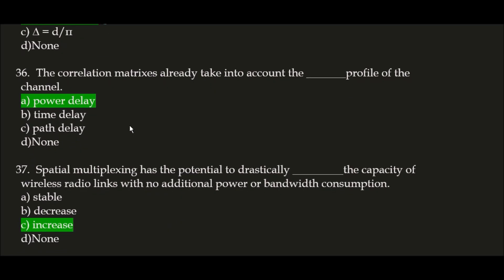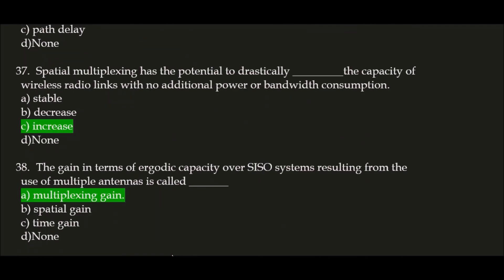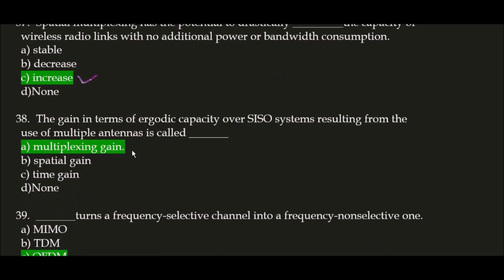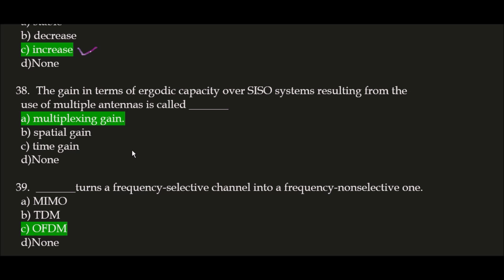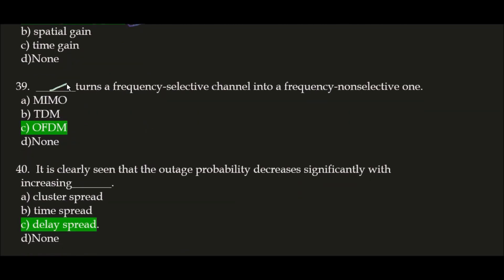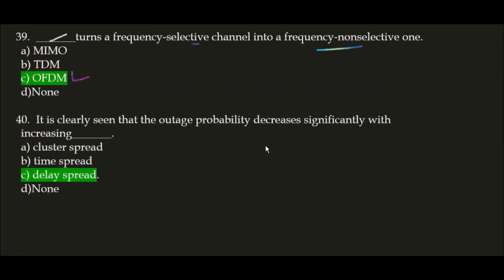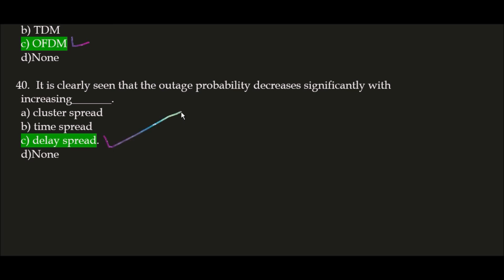The correlation matrices already take into account the power delay profile of the channel — option A is correct. Next question: spatial multiplexing has the potential to drastically increase the capacity of wireless radio links with no additional power or bandwidth consumption; the correct answer is option C. Next question: the gain in terms of ergodic capacity over SISO systems resulting from the use of multiple antennas is called multiplexing gain — option A is correct. Next question: blank space turns a frequency selective channel into a frequency non-selective channel; the correct answer is option C, OFDM. It's clearly seen that the outage probability decreases significantly with increases in angle spread; the correct answer is option C.